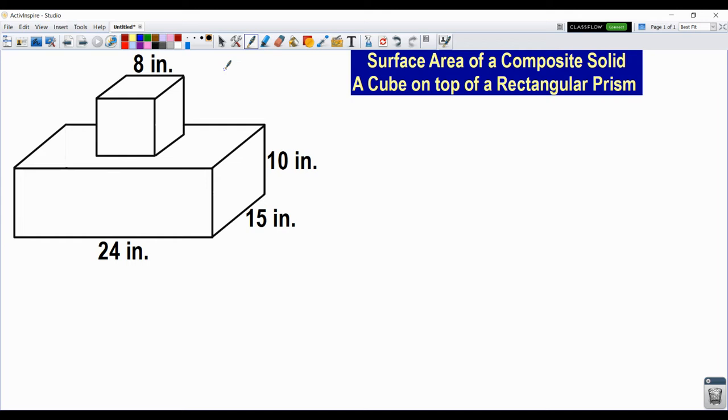First, it's important to know what a composite solid is. It's really just two or more three-dimensional shapes that are attached, that are connected to form one solid shape. As you can see in my title and image, I have a cube sitting on top of a rectangular prism. So we're taking those two three-dimensional shapes and combining them to form one composite solid.